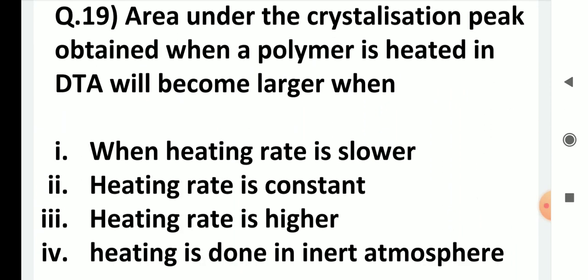The area under the crystallization peak obtained when a polymer is heated in DTA will become larger when: heating rate is lower, heating rate is constant, heating rate is higher, or heating is done in an inert atmosphere? The answer is when the heating rate is lower. When you heat slowly, crystallization occurs to a greater extent, so the area under the crystallization peak is larger.